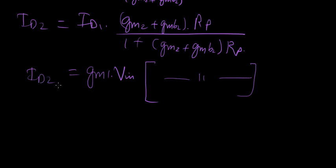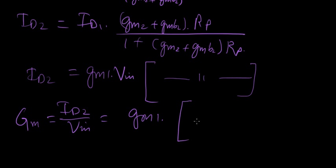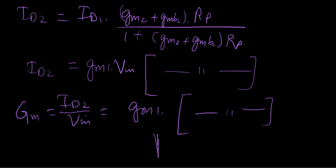Now the equivalent GM, or let's say uppercase GM, is nothing but ID2 over Vin. ID2 over Vin, which is GM1 times the same thing. All I'm going to do now is hook up the equivalent GM that we've got from here, GM, and times RD, which is the upward resistance to give us the gain. Minus GM times RD.